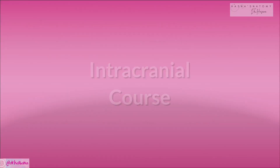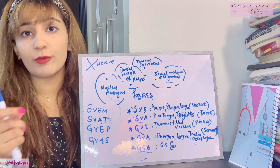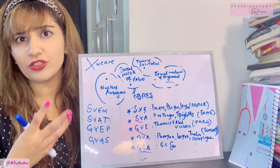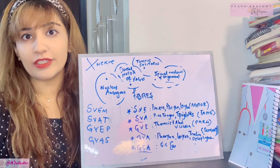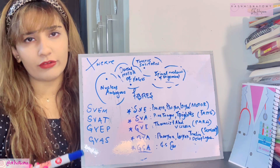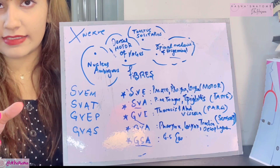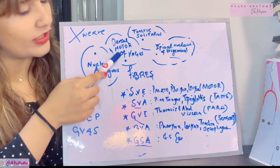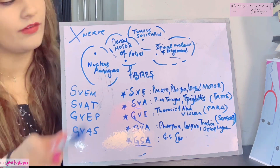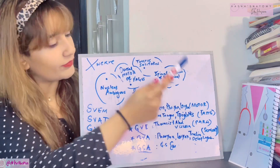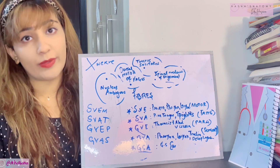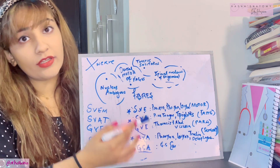The vagus nerve originates in the medulla oblongata. We need to talk about which nuclei it comes from — which nuclei are associated with the vagus nerve. If you remember the nuclei of the glossopharyngeal nerve, they're almost the same. Just one nucleus has changed: rather than the salivatory nucleus, add the dorsal motor nucleus of the vagus nerve. The rest are the same as the glossopharyngeal nerve — these are the four nuclei associated with the vagus nerve.